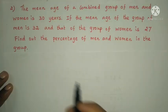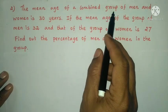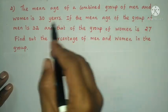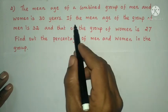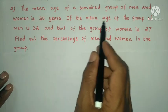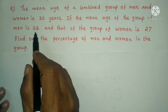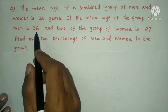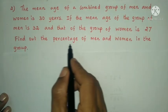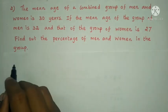Next question: the mean age of a combined group of men and women is 30 years. If the mean age of the group of men is 32 and that of the group of women is 27, find the percentage of men and women in the group.